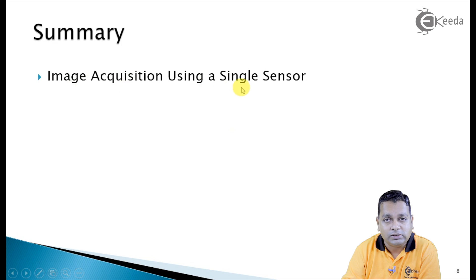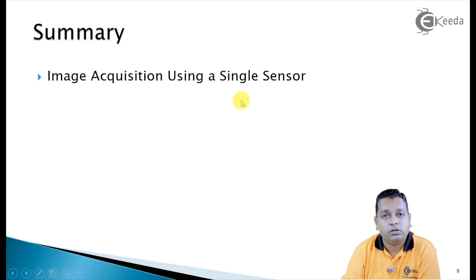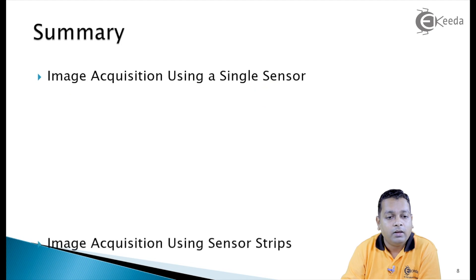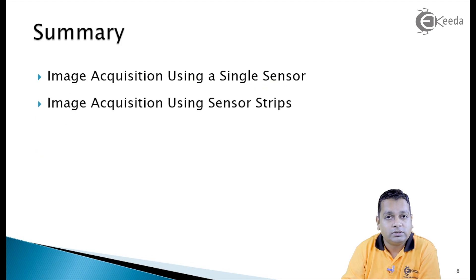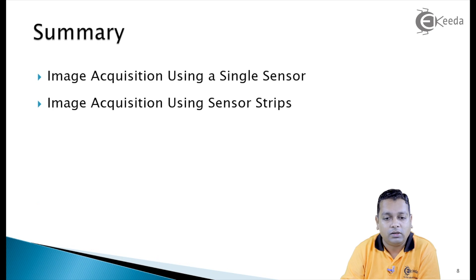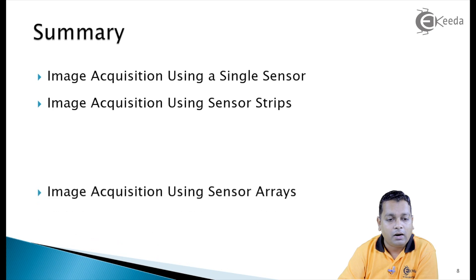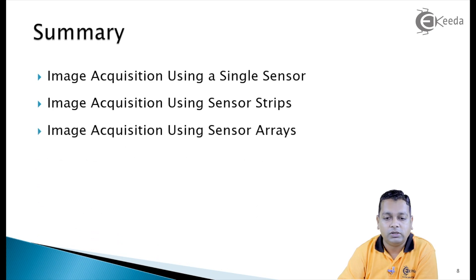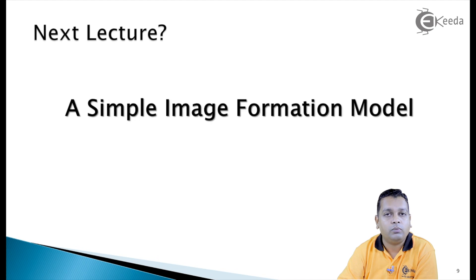To summarize image acquisition: using a single sensor requires motion in both x and y dimensions; using a sensor strip requires motion in one direction to form a two-dimensional image; and using sensor arrays requires no motion at all to image the scenario.